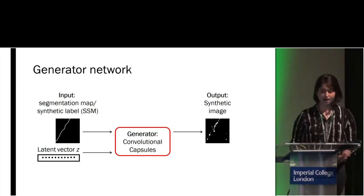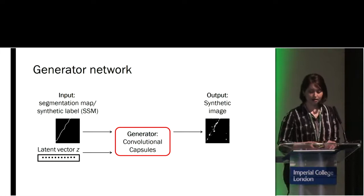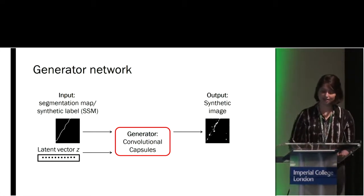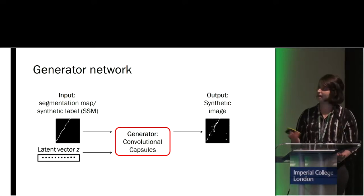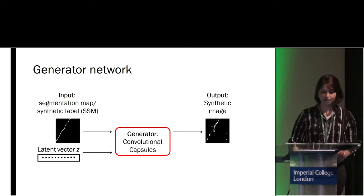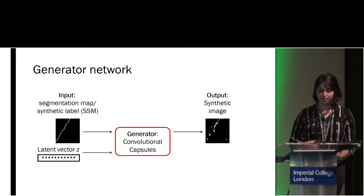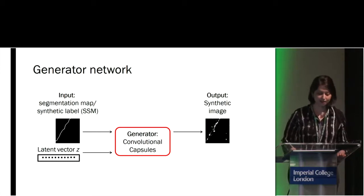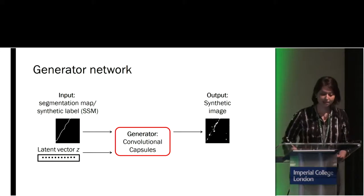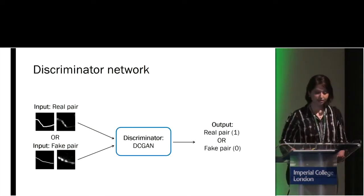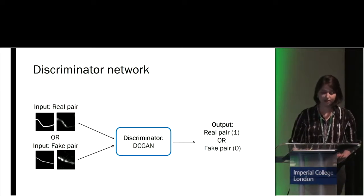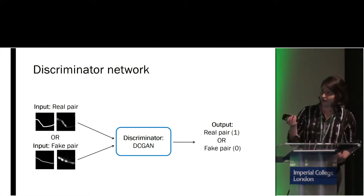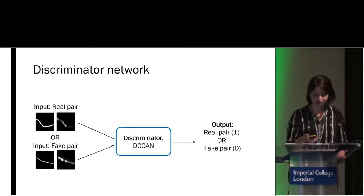A GAN is built of a generator network and a discriminator network. Our generator network is a conditional generator, so it takes in the segmentation label as input. The segmentation label can either be from the real manual labels or from our synthetic model which we call SSM. In addition, this network takes in a latent vector Z which controls the output synthetic image. Our discriminator network is also a conditional network and takes in as input a pair of real or fake images, and it classifies that as real or fake to help train our generator.